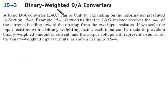So we'll start off by doing digital to analog. So we were talking earlier about analog to digital. Let's start out with the digital to analog. These are a little bit easier to understand. And the basic DAC can be built by expanding on information we just presented. In the previous example, we showed that the 2k resistor received the sum of the currents heading toward the op amp from the two input resistors. If we scale the input resistors properly with a binary weighting factor, each input can be made to provide a binary weighted amount of current. And the output voltage will represent the sum of all the binary weighted currents, as we'll see in this next diagram.